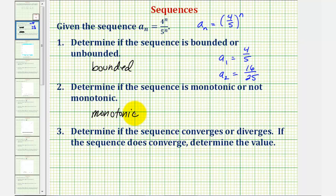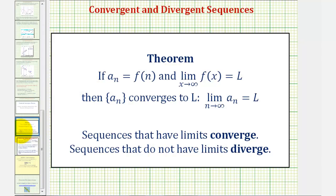Now we'll determine if the sequence converges or diverges, and if it converges, determine the value it converges to. There is a theorem that says if we have a sequence that is bounded and monotonic, it will converge. More formally, if a_n equals f(n) and the limit as x approaches infinity of f(x) equals L, then a_n converges to L. Sequences that have limits converge, and sequences that do not have limits diverge.